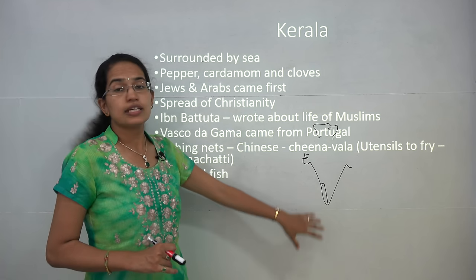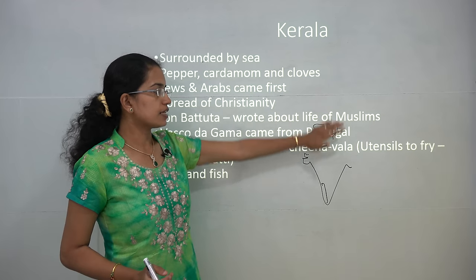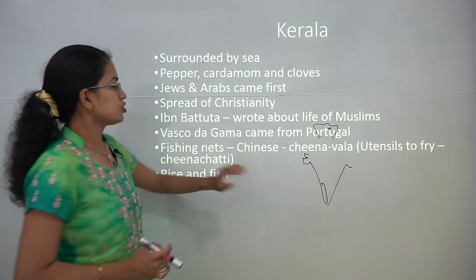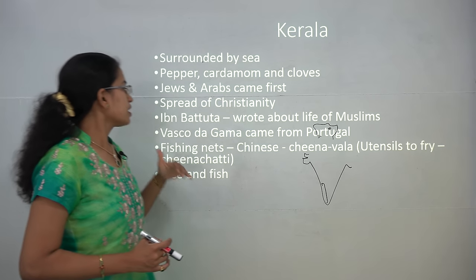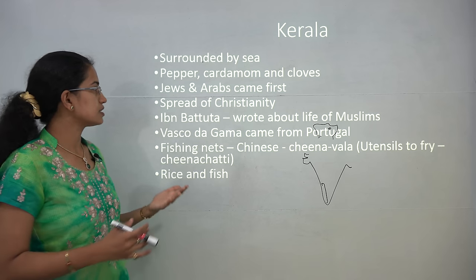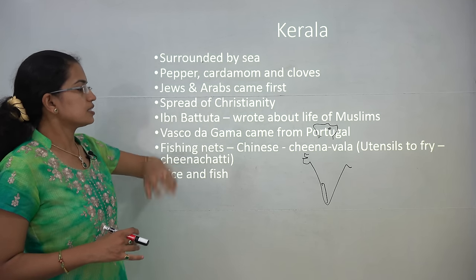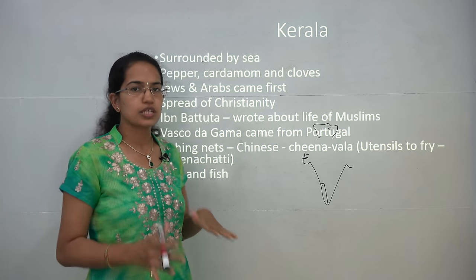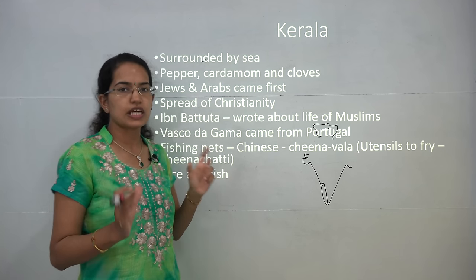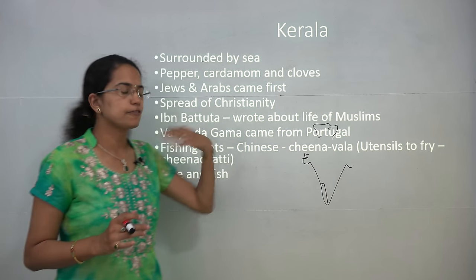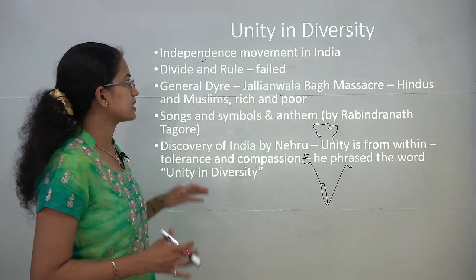Now let's come to the Kerala region. Kerala has been highly influenced by Arab travelers. Arab travelers came to the Kerala coast, in contrast to Chinese travelers who came to Ladakh. Jews and Arabs were the first to come here, followed by Vasco da Gama from Portugal. Ibn Battuta has written a lot on the life of Muslims in this region. The vegetation seen here is mainly pepper, cardamom, and cloves. This region is surrounded by the sea, so it has backwaters and a coastal area. The fishing nets used here have a name similar to the Chinese word, and the utensil used to fry is known as Chinachatti. Rice is the predominant food habit seen here.